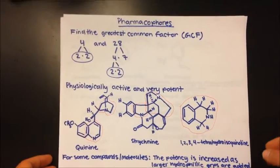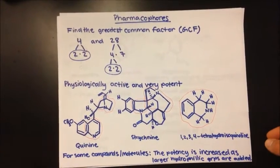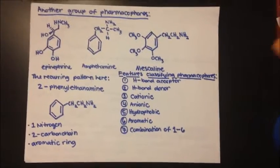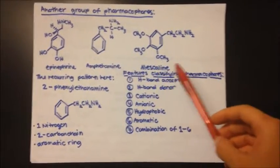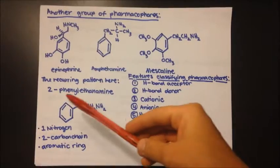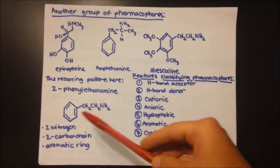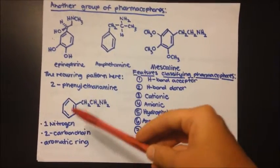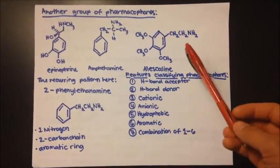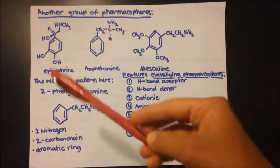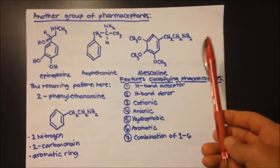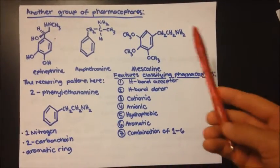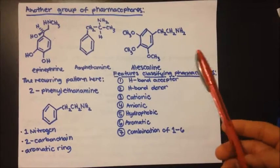Let's take a look at another group of pharmacophores. This group consists of epinephrine, amphetamine like methamphetamine, and mescaline. The recurring feature here is 2-phenylethanamine, which basically consists of a nitrogen, a 2-carbon chain, and an aromatic ring. This group is an excellent example of the features you look for when classifying molecules into common groups or identifying pharmacophores.